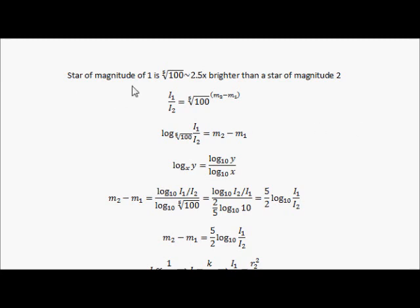A star of magnitude 1 is defined as being a fifth root of 100 times brighter than a star of magnitude 2. Historically, this definition came from the fact that a star of magnitude 5 was 100 times dimmer than a star of magnitude 0. So the lower the magnitude, the brighter the star.